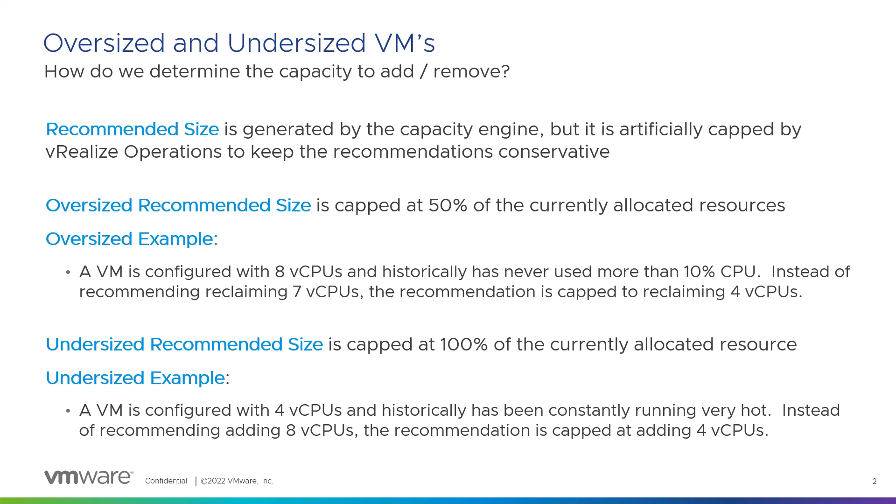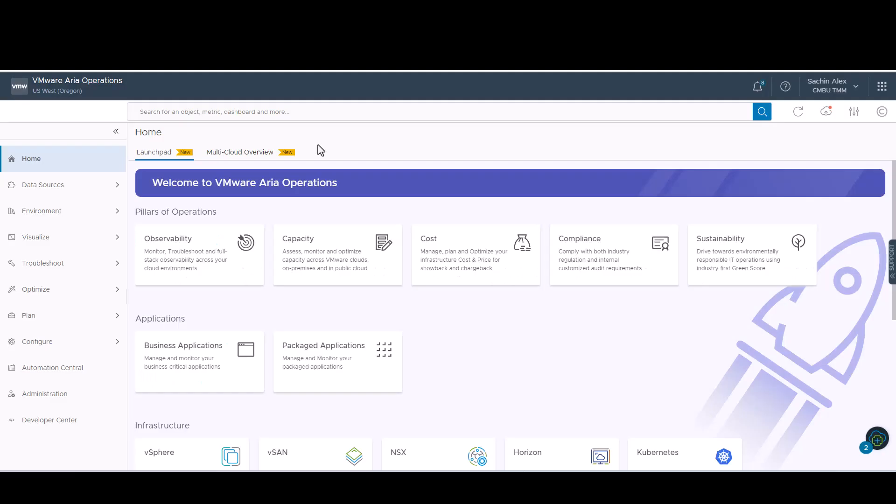For undersized VMs, the recommendation is capped at 100% of the current allocation. For example, a VM is configured with 4 vCPUs but we observe that it is always in need of resources. Because of the 100% cap, the recommendation is capped to adding only 4 vCPUs.